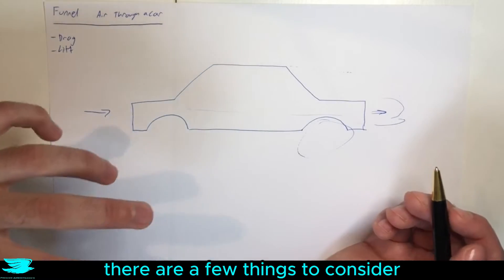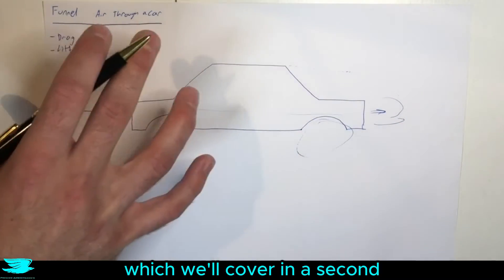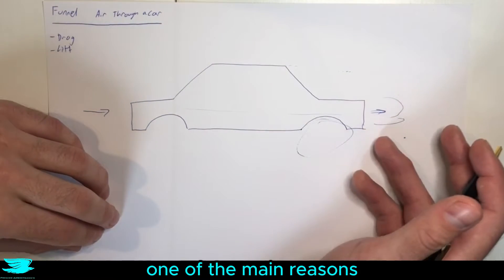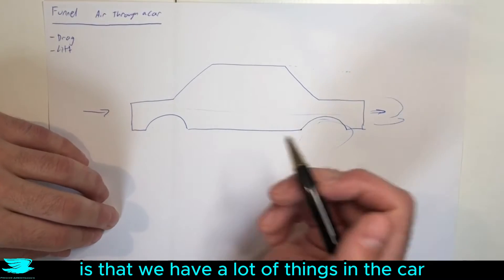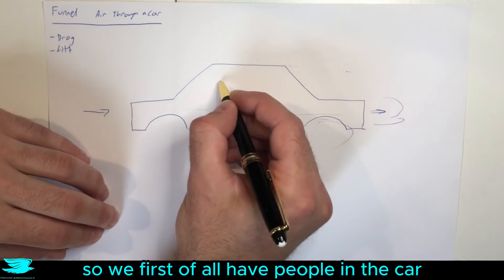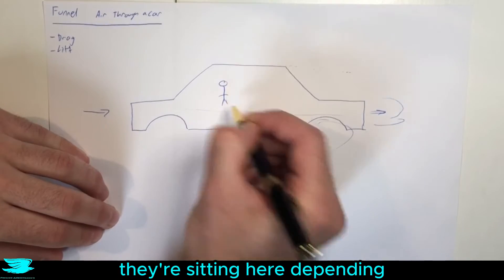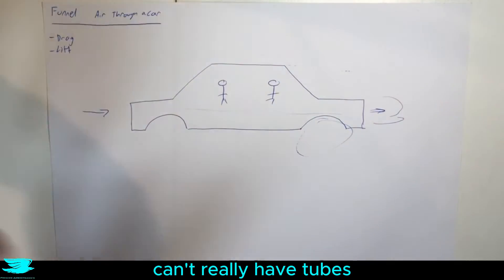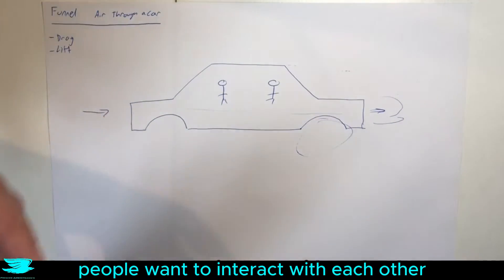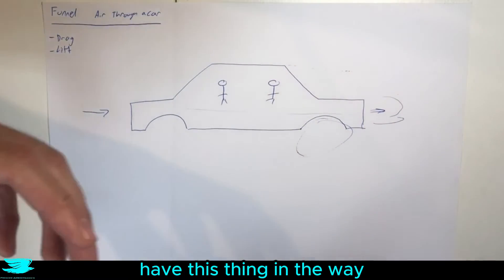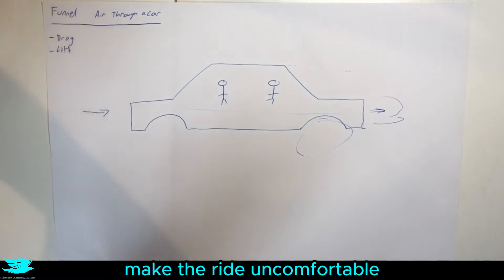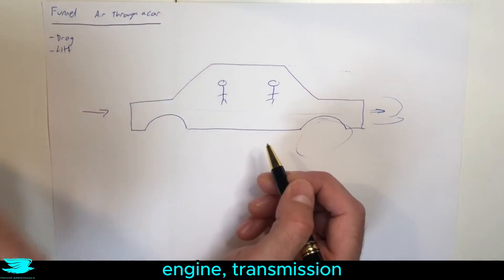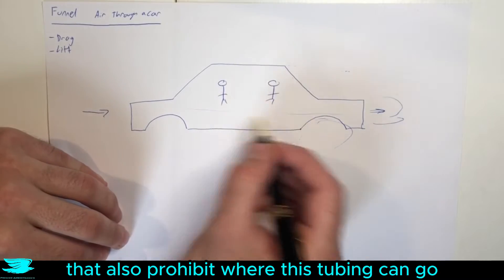Well there are a few things to consider. It's not just about lift and drag, which we'll cover in a second, it's also about practicality. One of the main reasons why we don't have this in a car is that we have a lot of things in the car. We first of all have people in the car, they're sitting here, so that means we can't really have tubes going through in between people. That's quite strange. People want to interact with each other and talk and they don't want to have this thing in the way, which will also potentially make the ride uncomfortable. Secondly we have the drivetrain, engine, transmission, all these kinds of things that also prohibit where this tubing can go.